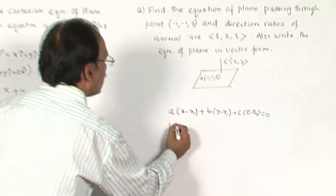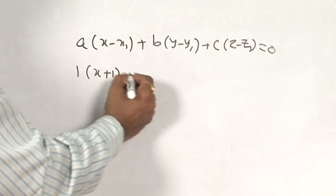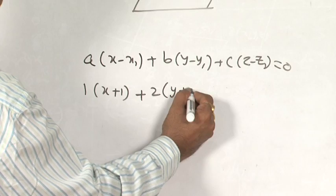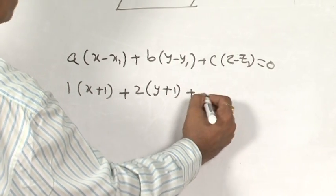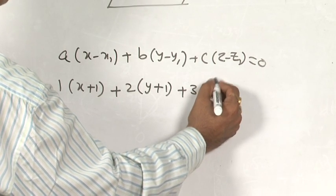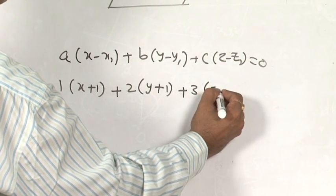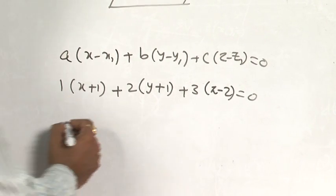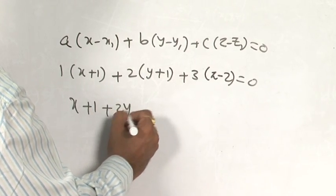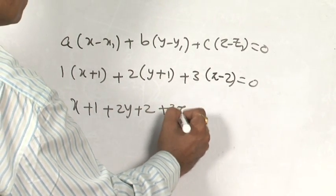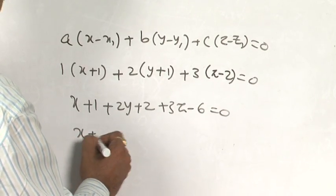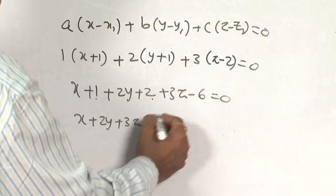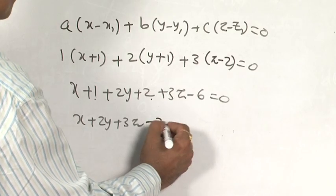Using the formula: 1·(x − (−1)) + 2·(y − (−1)) + 3·(z − 2) = 0, which is (x + 1) + 2(y + 1) + 3(z − 2) = 0. Expanding: x + 1 + 2y + 2 + 3z − 6 = 0, giving x + 2y + 3z − 3 = 0. This is the equation in Cartesian form.